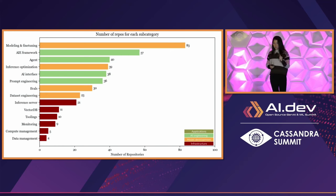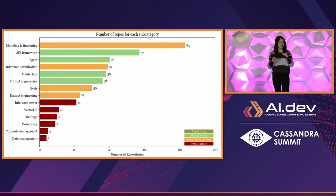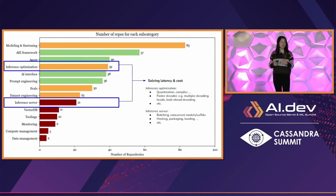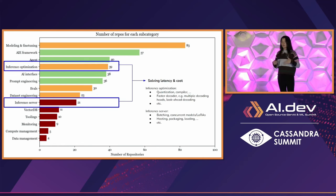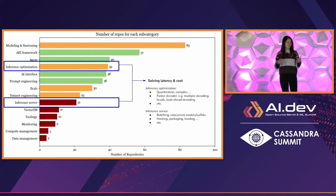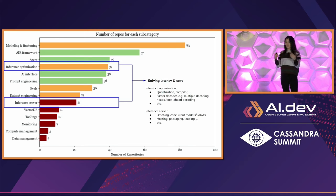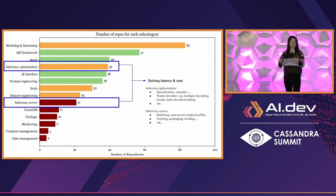One thing that really jumped out to me is the number of repos related to inference — inference optimizations and inference servers. These two categories are very closely related because they both solve for latency and cost. At the model level you might quantize a model to make it smaller and faster, or try newer techniques like faster decoding. For example, Medusa is a framework that uses multiple decoders for faster inference and faster token generation, or you can use look-ahead decoding. On the inference server side, you deal with dynamic, sequential, or continuous batching, or hosting multiple LoRA adapters concurrently.